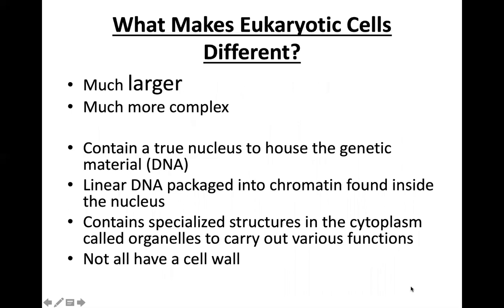So what are the differences? First of all, the eukaryotic cell is much larger and much more complex than the prokaryotic cell. It contains a true nucleus to house the genetic material, the DNA. Both have a kind of nucleus, but what we call the 'true nucleus' is a compartment with an envelope — a membrane — that is well isolated from the cytoplasm. That is what we find in eukaryotic cells. In the prokaryotic cell, the DNA is inside the cytoplasm in something nucleus-like, but it is not a true nucleus.